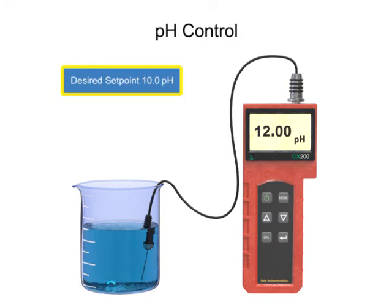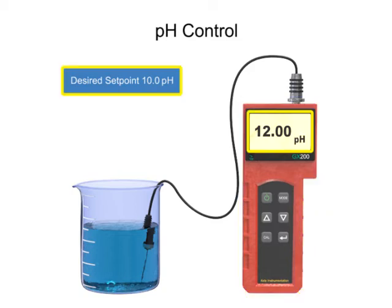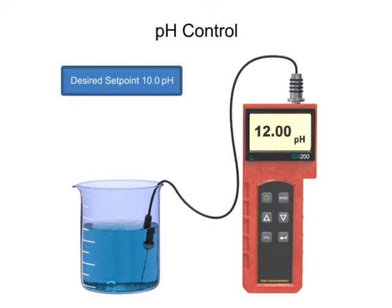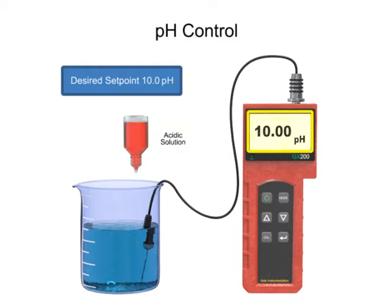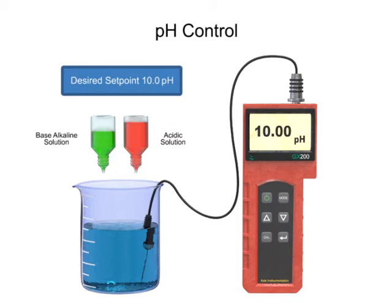To maintain the desired pH level in a solution, a sensor is used to measure the pH value. If the pH is not at the desired set point, a reagent is applied to the solution. When a high alkaline level is detected, an acid is added to decrease the pH level. When a low alkaline level is detected, a base is added to increase the pH level. In both cases, the corrective ingredients are called reagents.